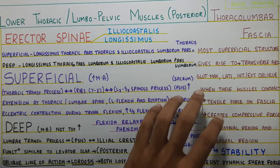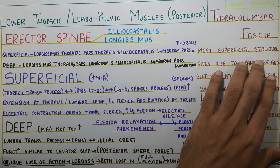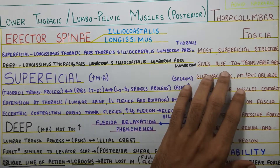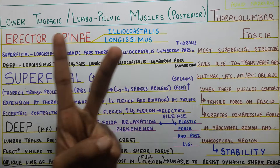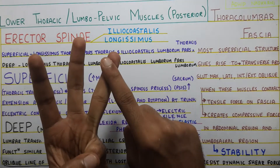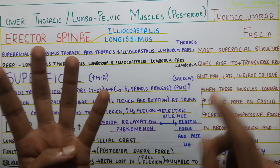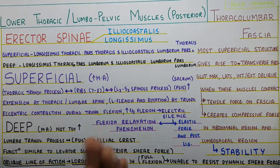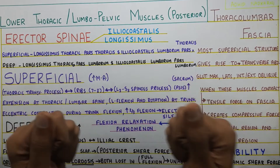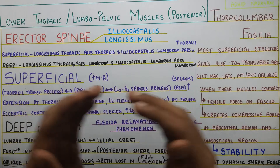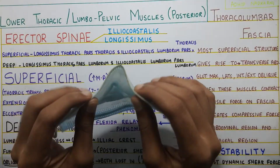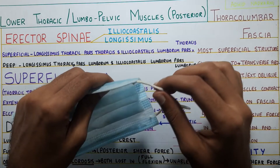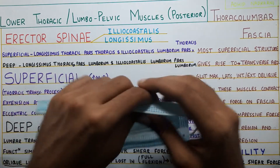Starting with the thoracolumbar fascia — it is the most superficial structure in the posterior aspect. It gives rise to the transverse abdominis, gluteus maximus, latissimus dorsi, and internal and external oblique — all the core muscles. So what happens is when these muscles contract, there is a tension that is created in this fascia. Think of it like a mask, a non-contracted structure like the fascia, connected from all sides to the muscles.